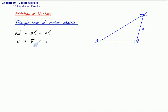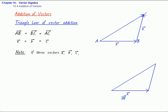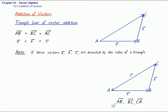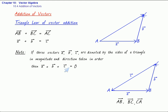Now here we should make another note. What if three vectors A, B, C are denoted by the three sides of a triangle ABC as AB, BC, and CA, taken in order? Then you will find that their vector sum is zero: A plus B plus C equals zero. If three vectors A, B, C are represented by the sides of a triangle in magnitude and direction taken in order in the same cycle, then their vector sum is zero.